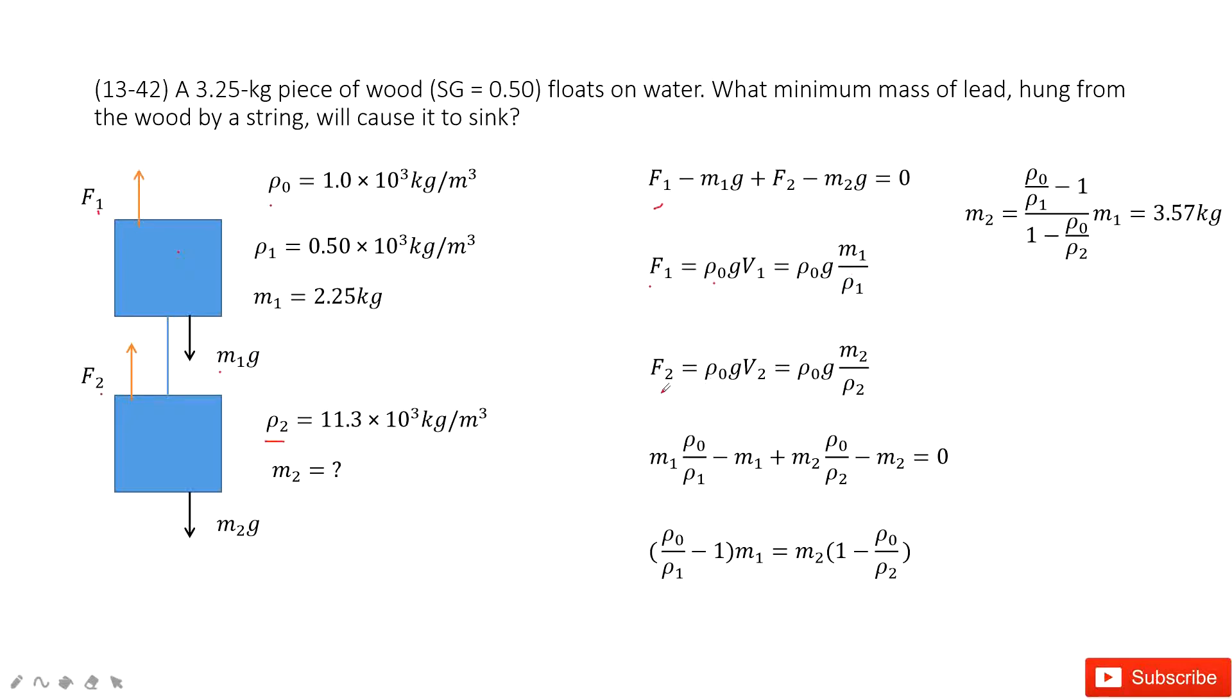Similarly, we can find the buoyancy for F2, exactly the same. Now we input M1 and M2 in this equation. So F1 and F2 in this equation. We get equation look like this one.